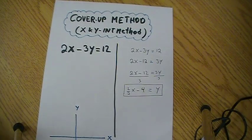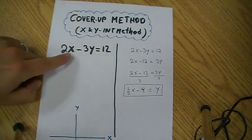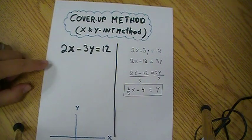Let me show you a quick method to graph an equation that will look something like this: 2x minus 3y equals 12.